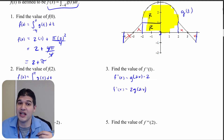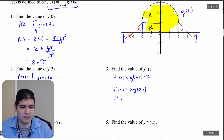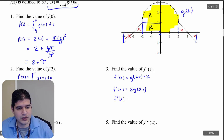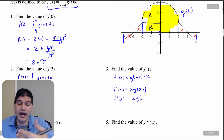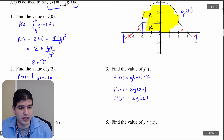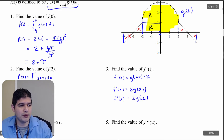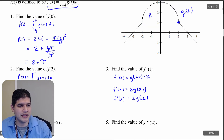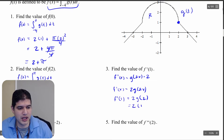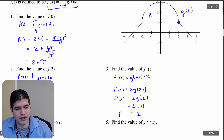We want to find f prime of 1. So f prime of 1 equals 2 times g of 2 times 1, which is g of 2. Looking at the graph, g of 2 equals 1. So f prime of 1 equals 2 times 1, which is 2.